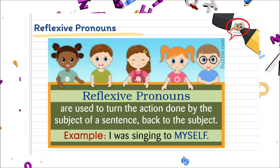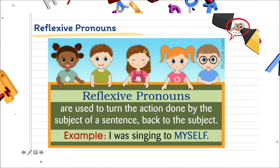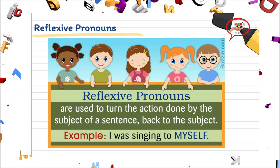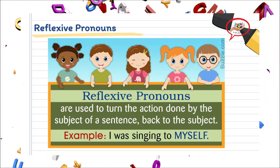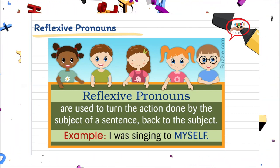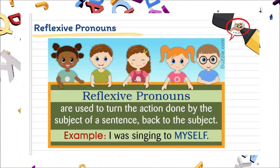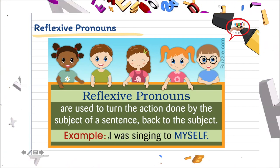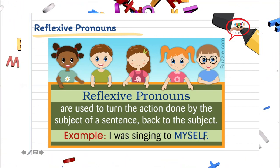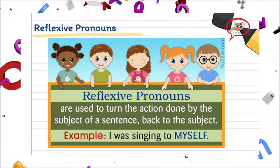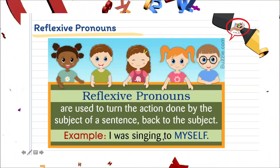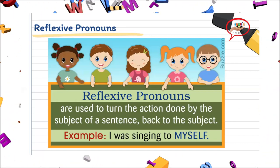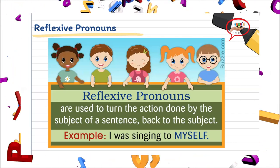Reflexive pronouns are used to turn the action done by the subject of a sentence back to the subject. Traduciendo: un reflexive pronoun es cuando nosotros le devolvemos la acción que el sujeto hace otra vez al sujeto. Es un poco contradictorio pero así lo manejamos. Aquí tenemos un ejemplo muy claro: el sujeto va a ser I — 'I was singing to myself.'